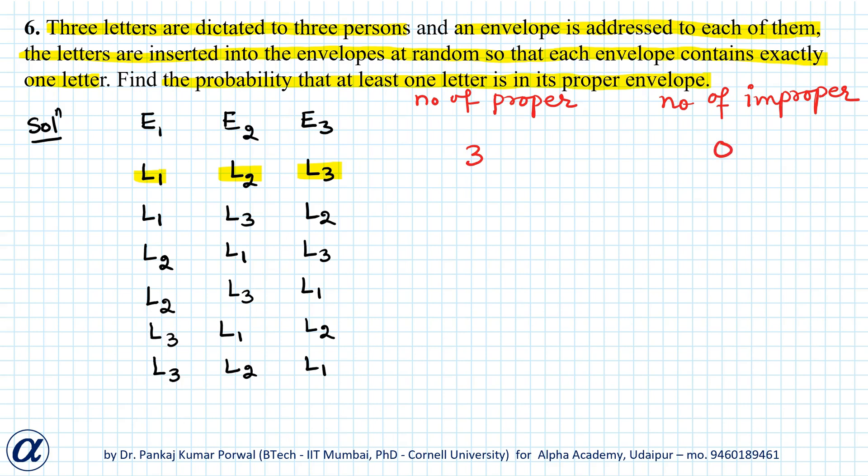In the second case, only L1 is in the proper envelope. So L3 is in E2 which is wrong, and L2 is in E3 which is also wrong. So the number of proper letters in the second case is 1 and the number of improper letters is 2.